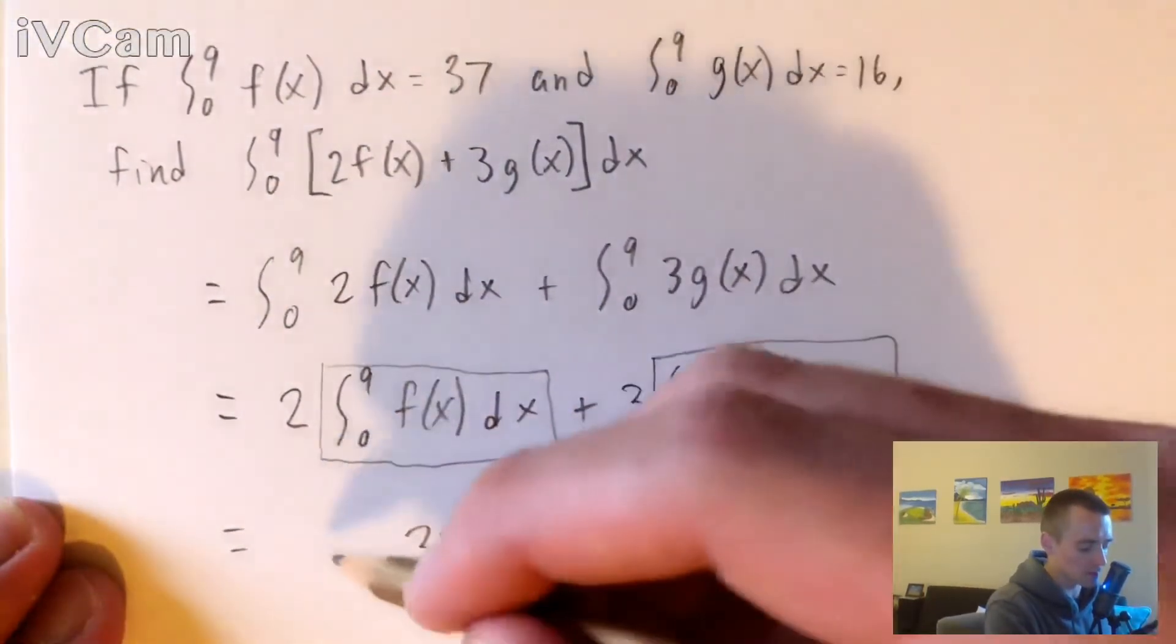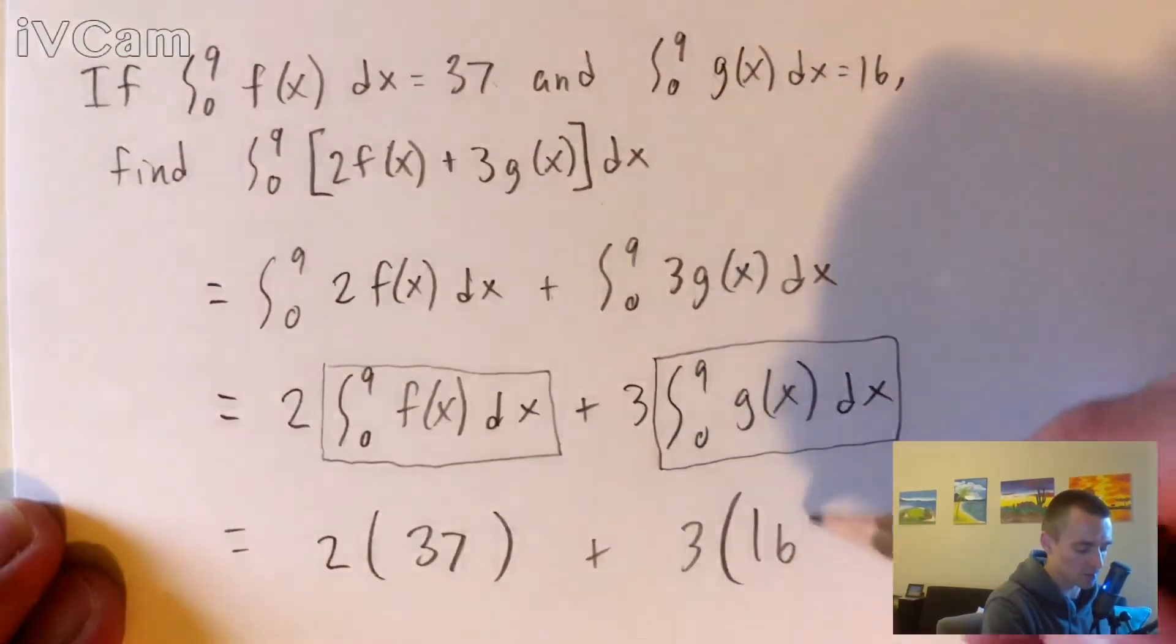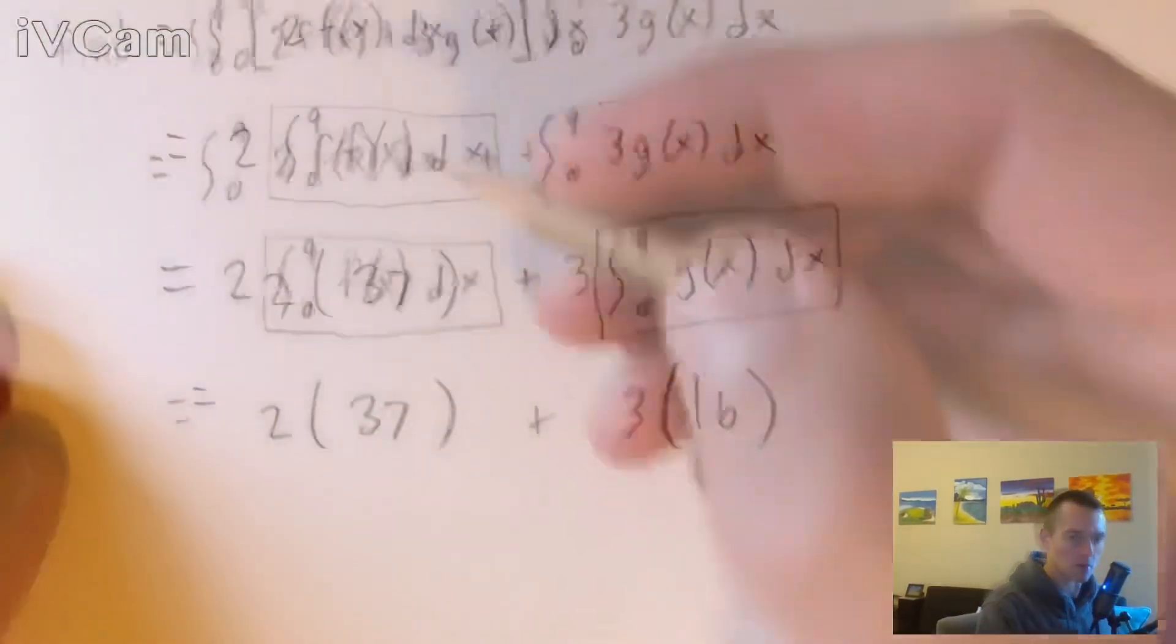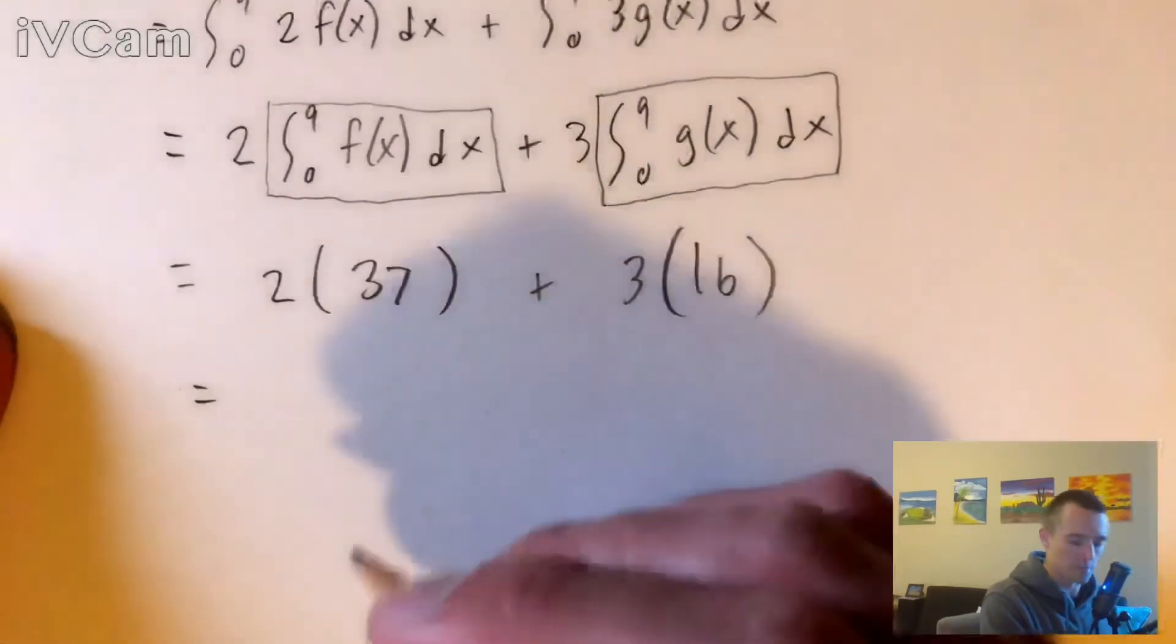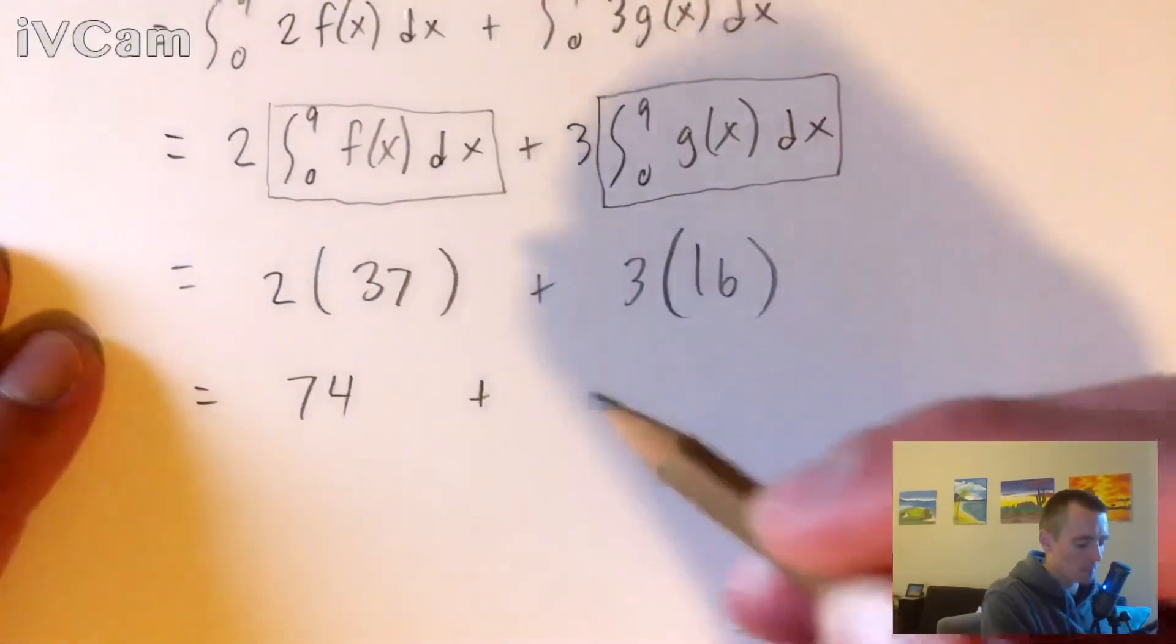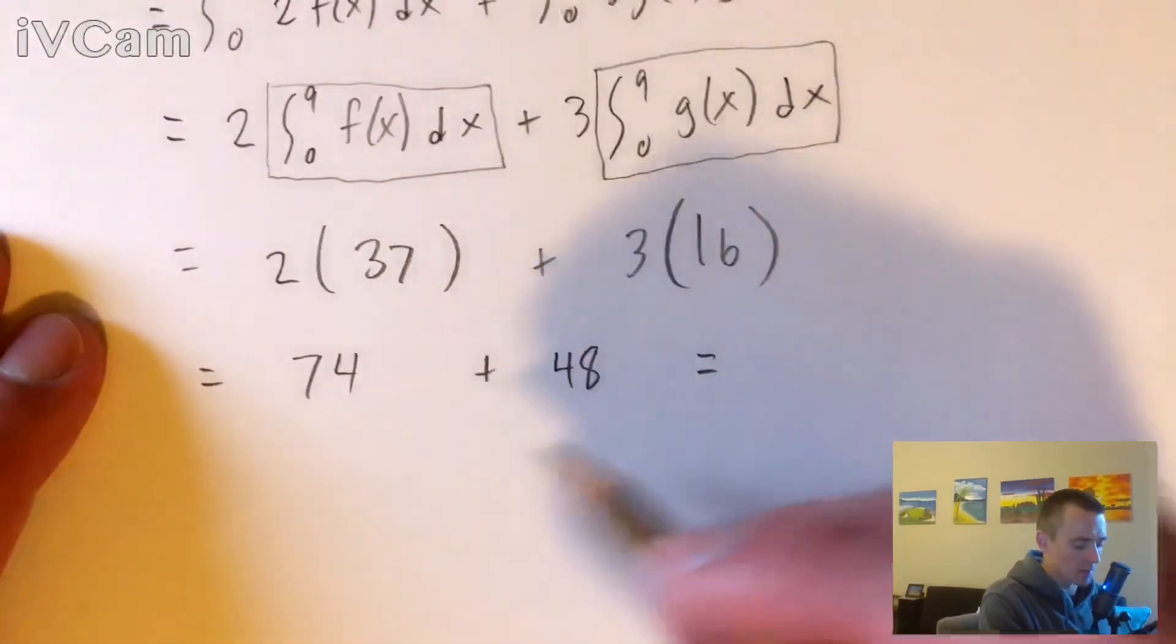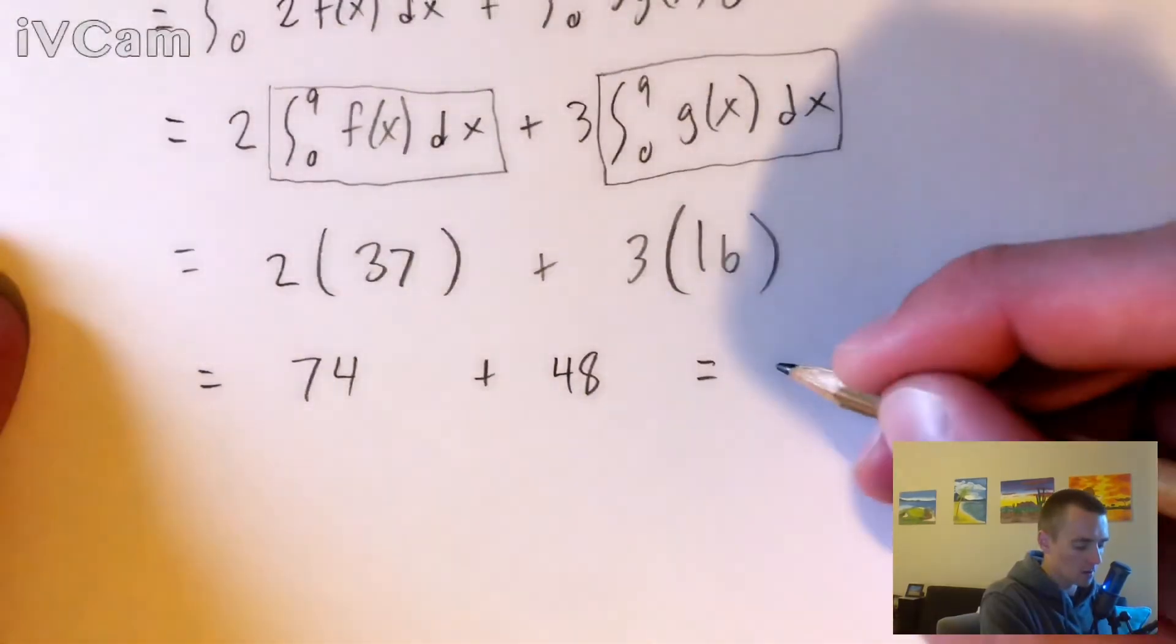So then we know that this is equal to just two times 37 plus three times 16. So at this point, it's pretty much just basic arithmetic. Two times 37 is gonna give us 74. And then three times 16 is gonna give us 48. 74 plus 48 is gonna give us 122.